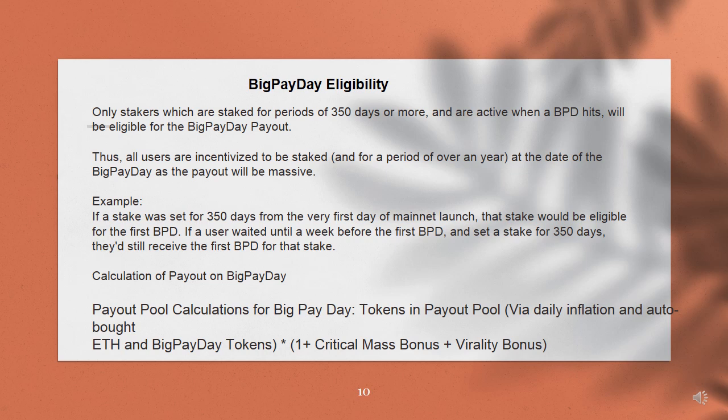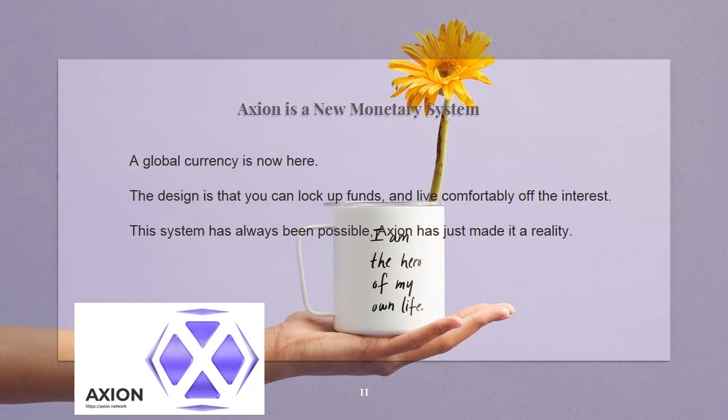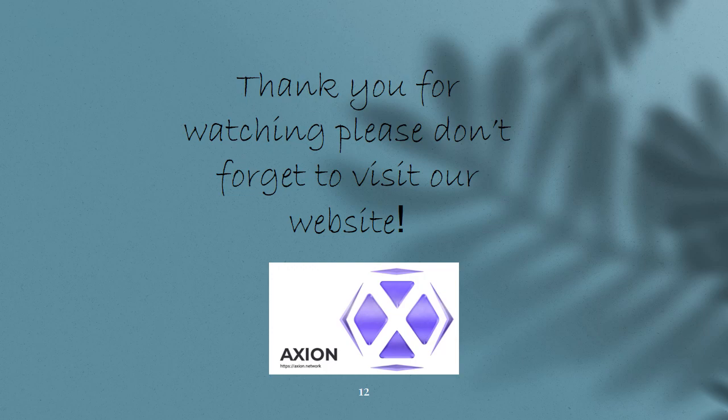Payout pool calculations for big payday: tokens in payout pool via daily inflation and auto-bought ETH, and big payday tokens × (1 + critical mass bonus + virality bonus). Axion is a new monetary system — a global currency is now here. The design is that you can lock up funds and live comfortably off the interest. This system has always been possible; Axion has just made it a reality. Thank you for watching — please don't forget to visit our website.